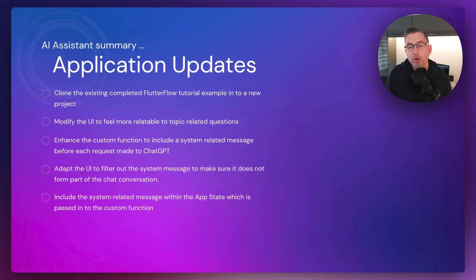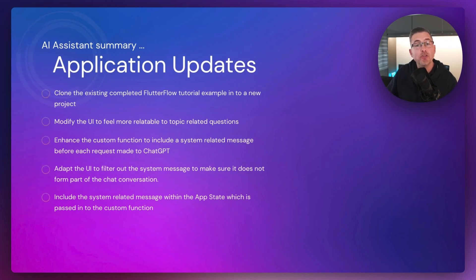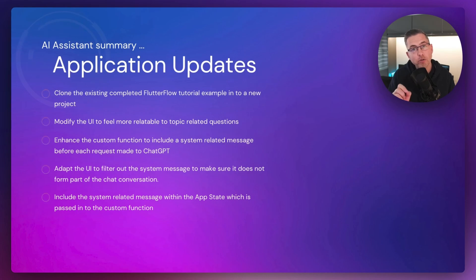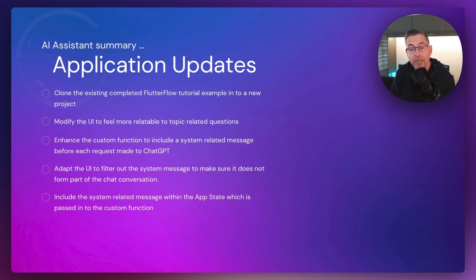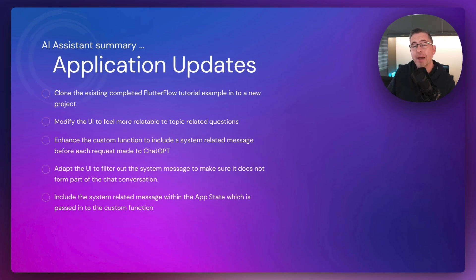We're going to clone the existing project completed at the end of the five-part mini series. If you're interested in building a general ChatGPT client where you can hold a conversation, go check out that series. I'll give you the link to the clone of the project to get you to the right starting point, and then we're going to modify the UI to make it more relatable — keeping it as an IT support assistant as a comparison to the previous video.